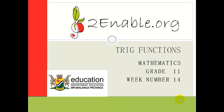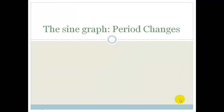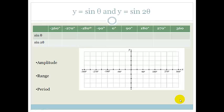Good day grade 11s. Welcome to your first lesson in week 14. Last week we looked at the sine graph, the cosine graph and the tan graph and what we knew about them. Now we're going to introduce some new things — specifically we're going to be looking at period changes. So the first thing we're going to do is plot our basic sine theta from minus 360 to positive 360, and then plot y equals sine 2 theta and see what happens.